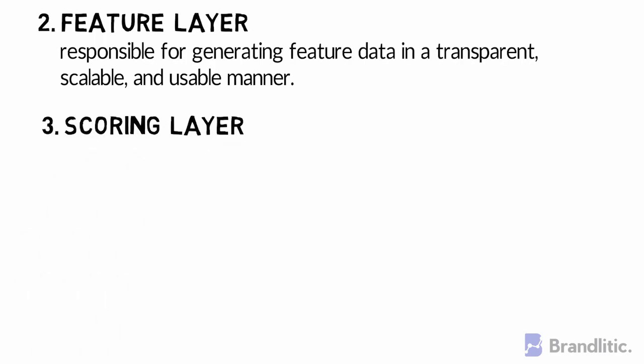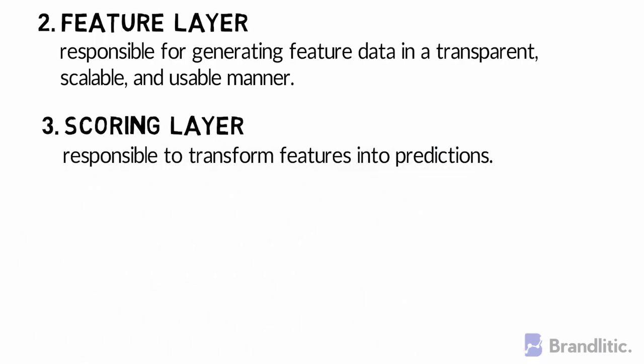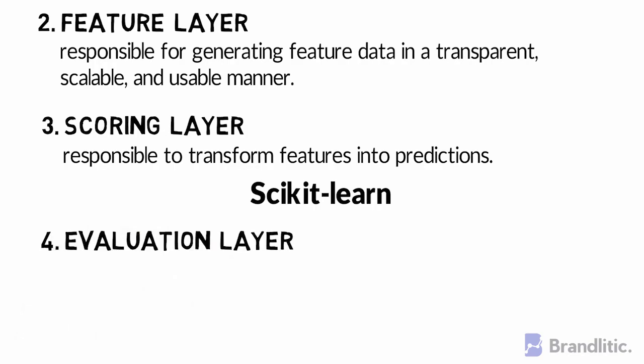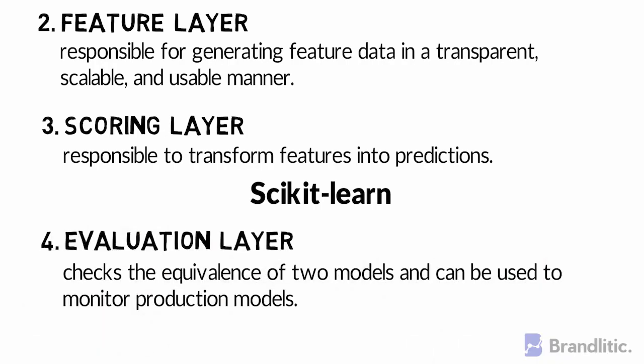Third, the Scoring Layer, which is responsible for transforming features into predictions. Scikit-learn is most commonly used here and is the industry standard for scoring. Fourth, the Evaluation Layer checks the equivalence of two models and can be used to monitor production models — specifically, to monitor and compare how closely the training predictions match the predictions on live traffic.